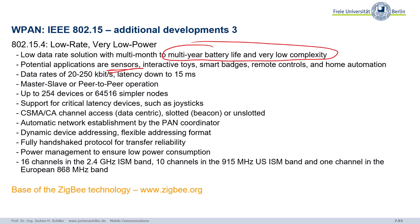The spec also required support for many many more nodes in networks. It used a collision avoidance scheme with automatic network establishment. It could operate in different frequency bands — 900 MHz and 2.4 GHz. That was basically the starting point of the ZigBee technology.